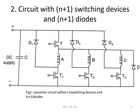The next circuit is the circuit with N+1 switching devices and N+1 diodes. In this figure the motor has 3 phases A, B, and C. Therefore the converter circuit will have 4 switching devices T, T1, T2, and T3, and 4 diodes D, D1, D2, and D3.